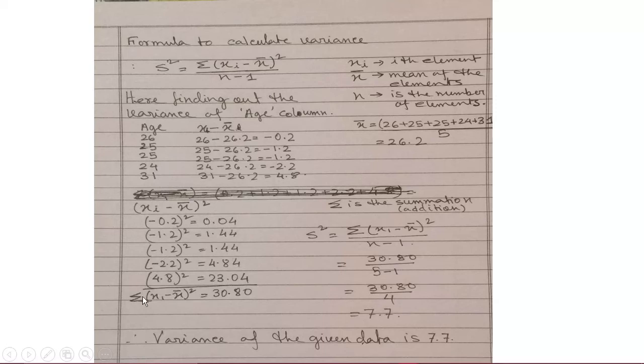You will read it as xi element minus x mean whole square and here everywhere we have found out to calculate it. A simple calculation is involved out here. And finally, summation of xi minus x mean whole square. I find out as 30.8. Yeah, 30.80, whatsoever you say.